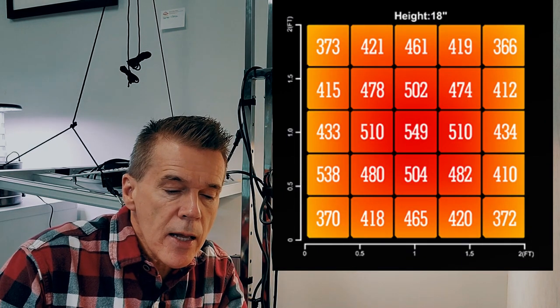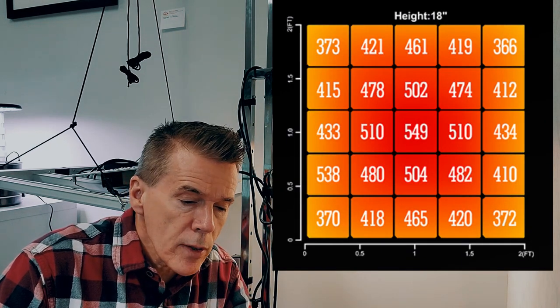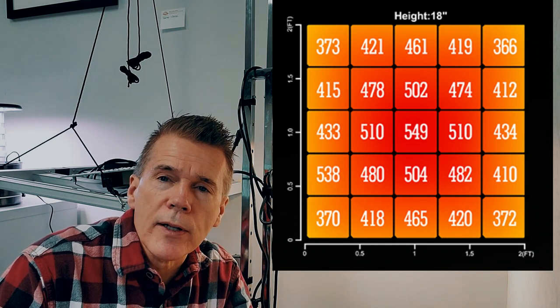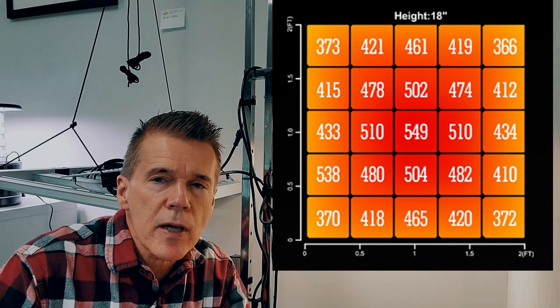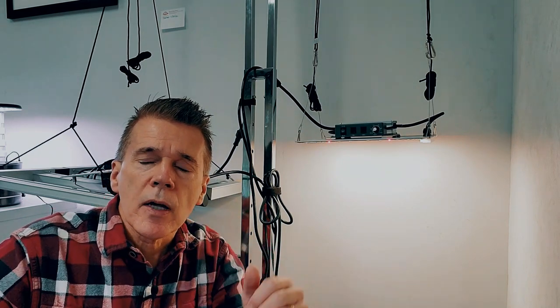18 inches above the canopy, you're still getting 448.64 average ppfd. Very evenly blanketed across the top. Based on my personal growing, I would probably run this at 14 inches above canopy.